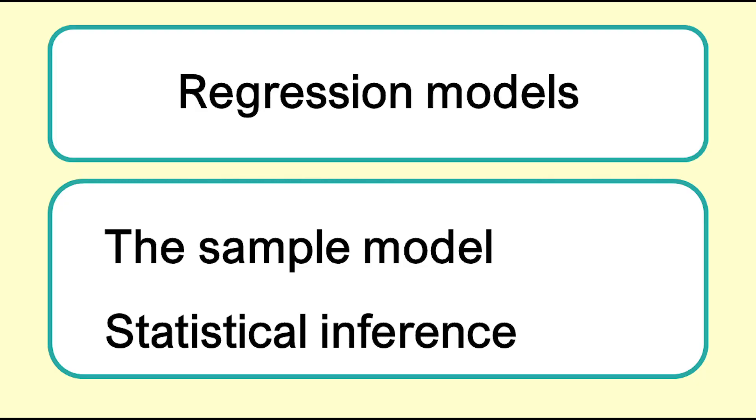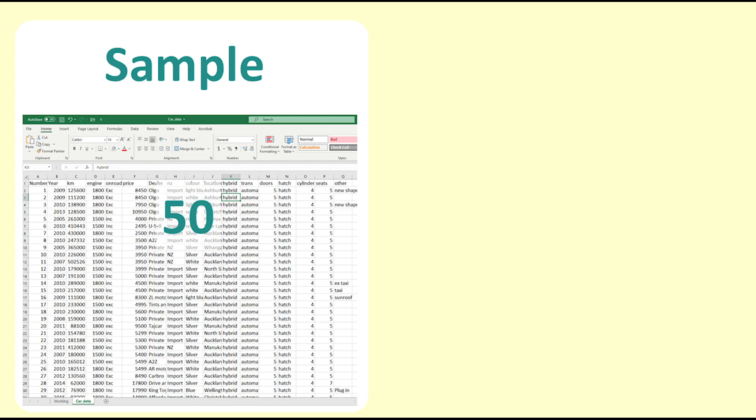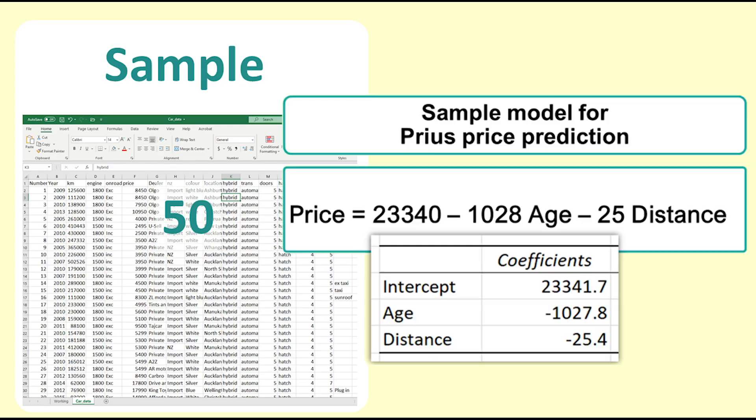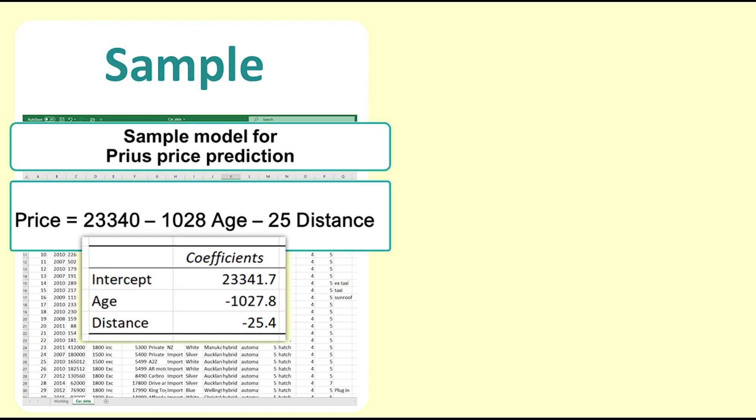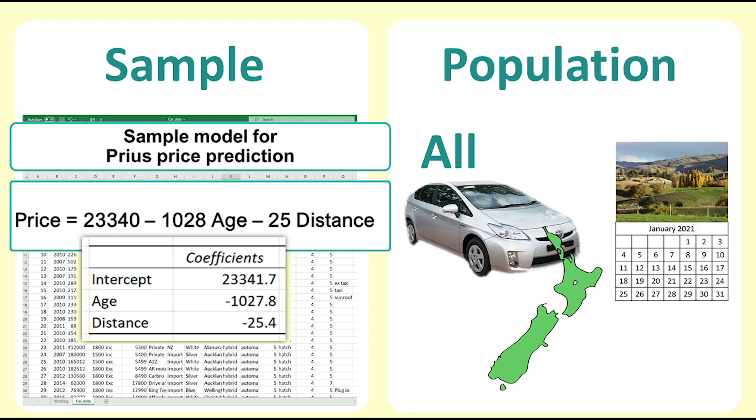When we fit a regression model, two processes are operating. We find the best fit of the model to the sample data. This is a mathematical process. Then, we use statistical inference to find out what we can say from the sample model about the relationships in the population from which the sample is drawn.